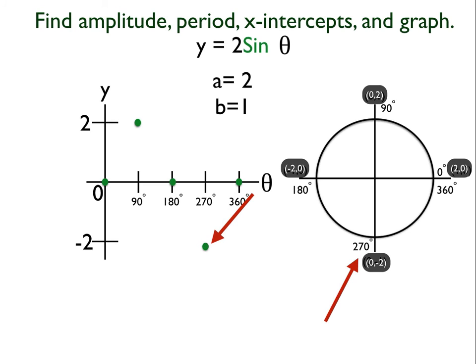So I can just plot my point. And there I go. I have all my points. And at this point now, I can just connect my dots, if you will. And I have my graph. So I know my amplitude, I know my period, my x-intercepts, and my graph. And this is how I do the sine function graph.